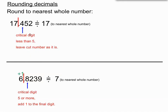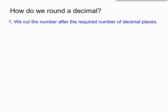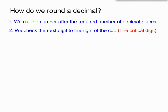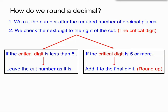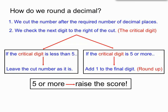To summarise: we cut the number after the required number of decimal places, check the next digit to the right — the critical digit. If it's less than five, leave the number as it is. If it's five or more, add one to that final digit — that's rounding up. The quick saying is: five or more, raise the score. I hope you get plenty of practice. See you next time on the third video of the decimals video series.